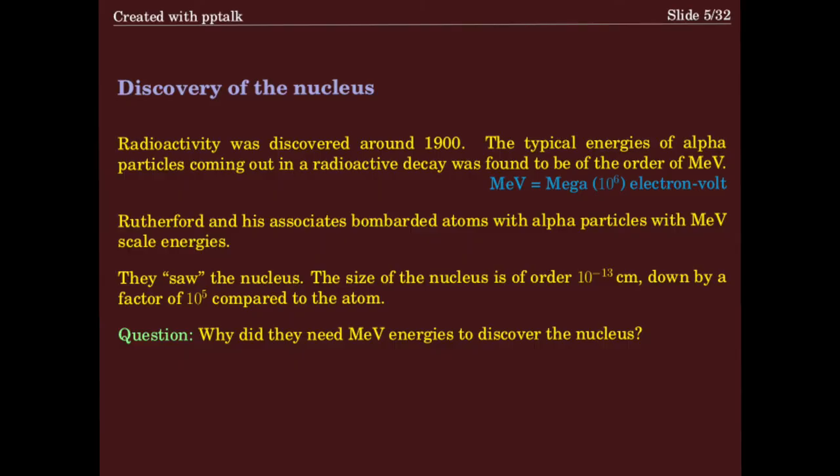The discovery of the nucleus was a little after 1900. Radioactivity was discovered around 1900, and the typical energies of alpha particles coming out in radioactivity were found to be of the order of MeV — mega electron volts. Rutherford and his associates bombarded atoms with these alpha particles. They saw the nucleus in a very classic experiment. They found that the size of the nucleus is of order 10 to the minus 13 centimeters — smaller by a factor of 10 to the 5 compared to the atom, which is roughly 10 to the minus 8 centimeters.